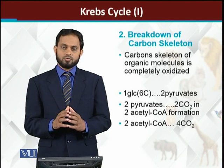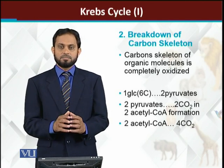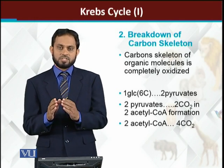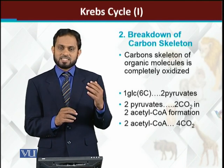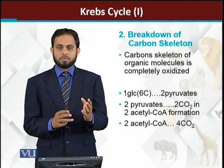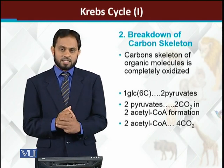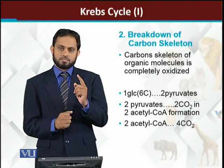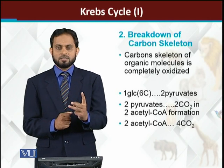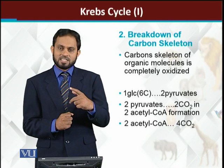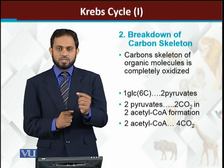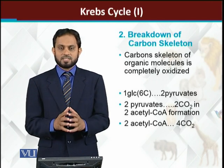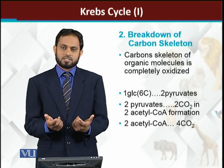In the Krebs cycle, the carbon skeleton of glucose is completely broken down and oxidized. Glucose has six carbons. After glycolysis, the six-carbon glucose forms two three-carbon pyruvate molecules. When pyruvate is converted to acetyl-coenzyme A, one carbon is released as carbon dioxide, leaving two carbons that enter the Krebs cycle and are also converted into carbon dioxide. Thus all carbon atoms of glucose are completely oxidized.